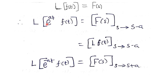Here 'a' is a constant. When the term is e^{+at}, we replace s by s minus a in the final answer. When it is e^{-at}, s is replaced by s plus a. This replacement of s by s minus a or s plus a is called the shifting property.